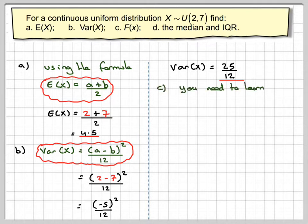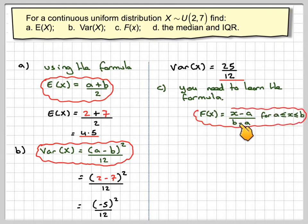Now you need to learn the formula for the cumulative distribution function. So F(x) is (x - a) over (b - a) for x being between a and b.